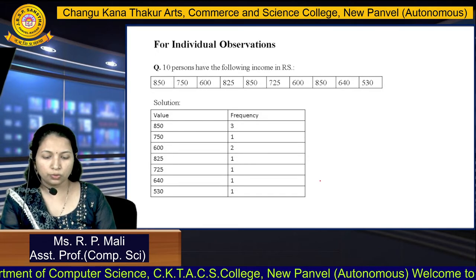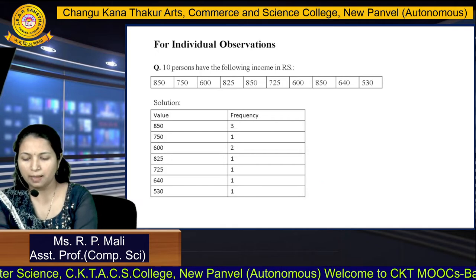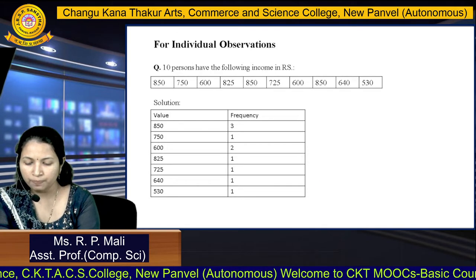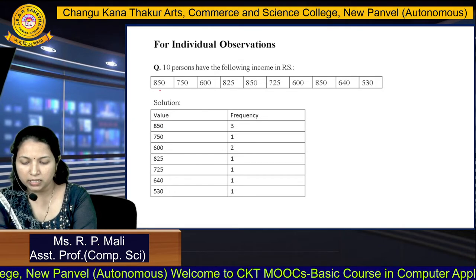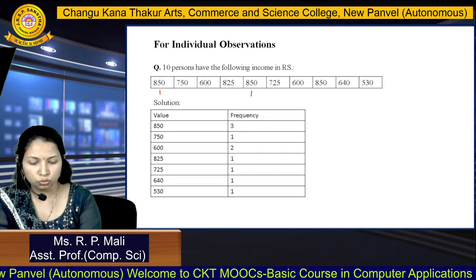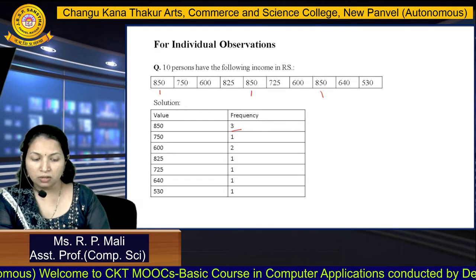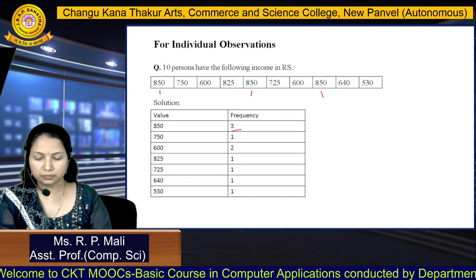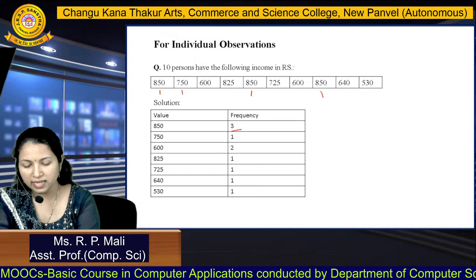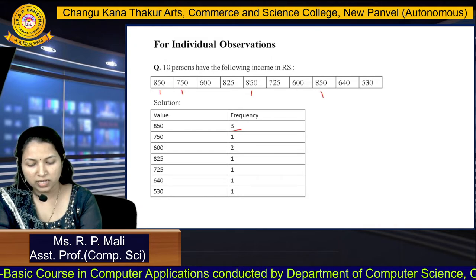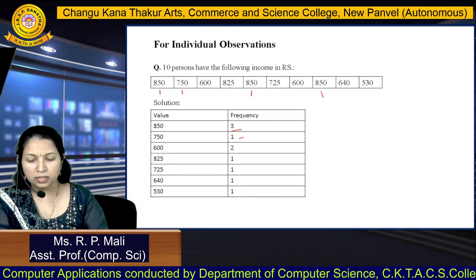What we are going to do is write the unique values from the series. The first value is 850 — we write 850 and count how many times it occurs: one, two, three. So 850 occurs three times in the series. The next value is 750, which occurs only once, so we write frequency as one.